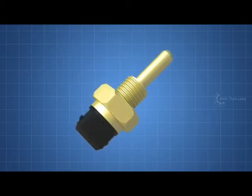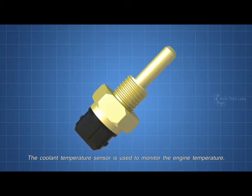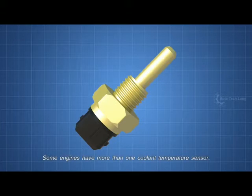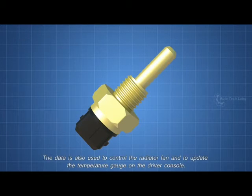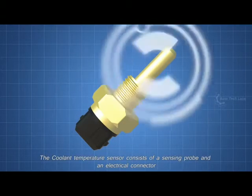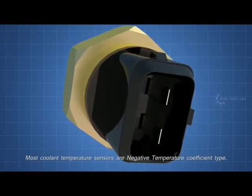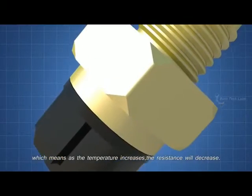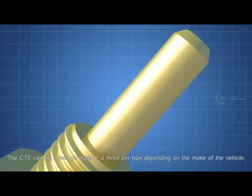Next, the coolant temperature sensor. The coolant temperature sensor is used to monitor the engine temperature. The ECU will use this data to manage fuel injection and ignition time. Some engines have more than one coolant temperature sensor. The data is also used to control the radiator fan and to update the temperature gauge on the driver console. The coolant temperature sensor consists of a sensing probe and an electrical connector. Most coolant temperature sensors are negative temperature coefficient type, which means as the temperature increases, the resistance will decrease. The CTS can be a two pin type or a three pin type depending on the make of the vehicle.